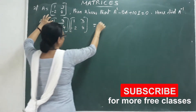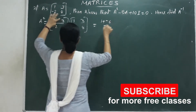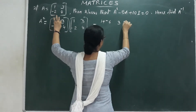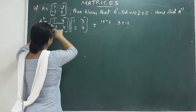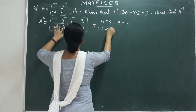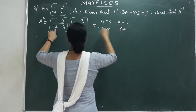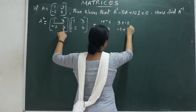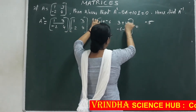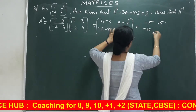Computing each element: first element is 1×1 + 3×(-2) = 1 - 6 = -5. Next element: 1×3 + 3×4 = 3 + 12 = 15. Then -2×1 + 4×(-2) = -2 - 8 = -10. Last element: -2×3 + 4×4 = -6 + 16 = 10. So A squared equals [[-5, 15], [-10, 10]].